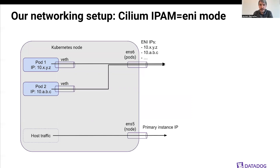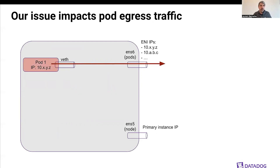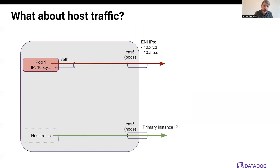Let's discuss our networking setup. We use Cilium in IPAM ENI mode, which means every pod is allocated an IP from the VPC. Routing is performed on the host so that host traffic uses the primary instance interface and pod traffic uses additional interfaces. Our issue was definitely impacting pod egress traffic. We wanted to know if other types of traffic were impacted, so we first looked at host traffic — and it turns out host traffic was completely fine and was using all the queues.